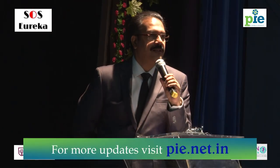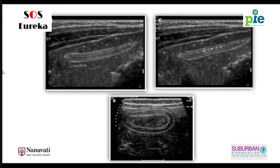The right iliac fossa is a Pandora's box — we've discussed appendix, mesenteric lymph nodes, and intussusception. Worms are usually an incidental finding. Using a high-frequency probe, a fluid-filled small bowel in children will reveal long structures — sometimes with air visible within the worm's bowel — and you can see wriggling movements. These are roundworms.